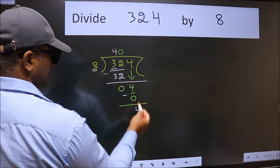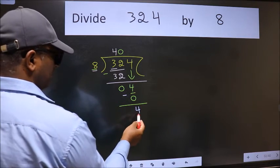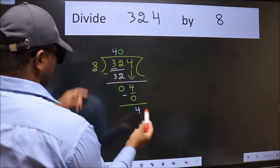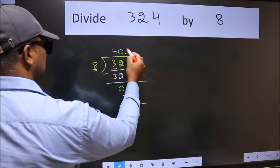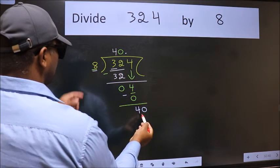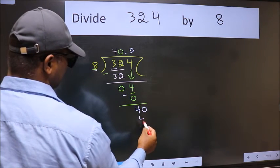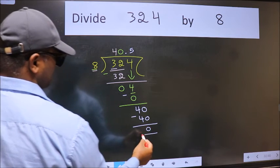Over here, we did not bring any number down. And 4 is smaller than 8. So now we can put dot and take 0. So 40. When do we get 40 in 8 table? 8 fives 40. Now we subtract, we get 0.